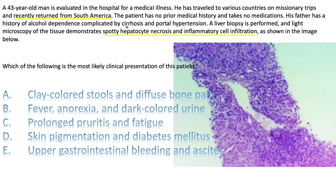His father has a history of alcohol dependence complicated by cirrhosis and portal hypertension — you should not gain anything from this distractor, because his father's cirrhosis is a result of alcohol use and has no genetic origin, so ignore this. A liver biopsy is performed; microscopy demonstrates bridging hepatocyte necrosis and inflammatory cell infiltration. The inflammatory cells are lymphocytes, so this must be a viral illness.